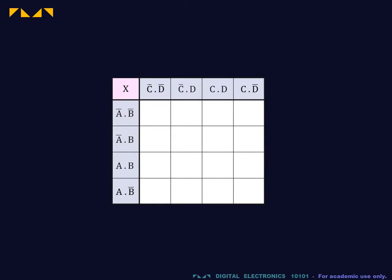As in the two variable case, the variables are arranged in rows and columns. In the four variable case, the first two inputs A and B are arranged in rows. The remaining two inputs C and D are arranged in columns.